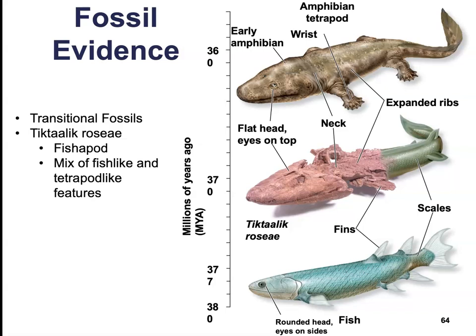Tiktaalik has a mixture of fish-like and tetrapod-like qualities. For example, it's fish-like in that it has gills and fins, but the pectoral front fins appear to be the beginnings of wrist bones. Unlike a fish, it appears to have had a flat head with eyes on top. So it has a little bit of both.